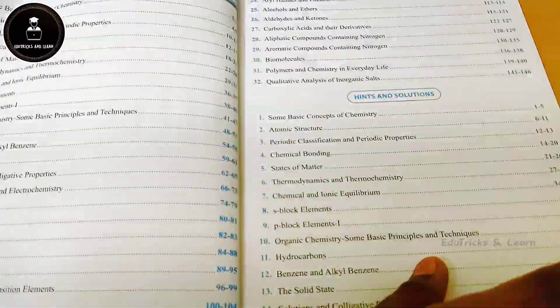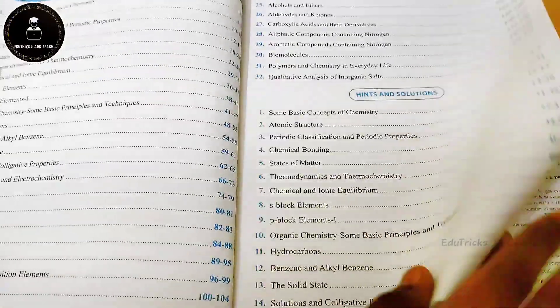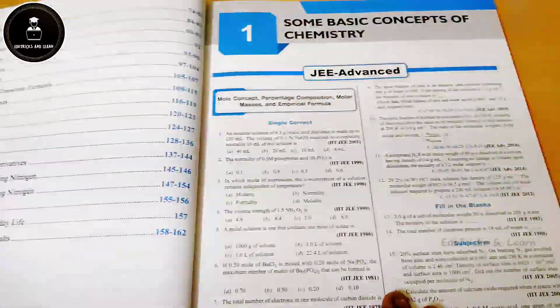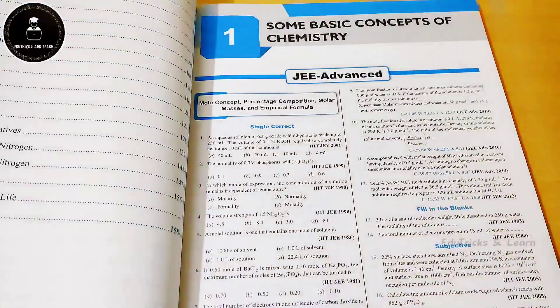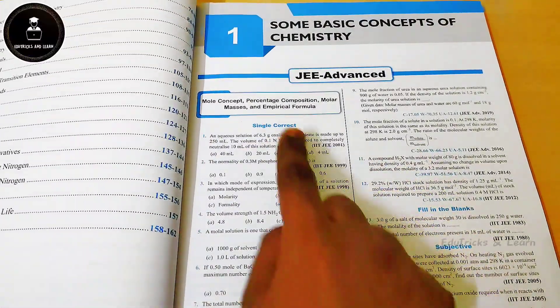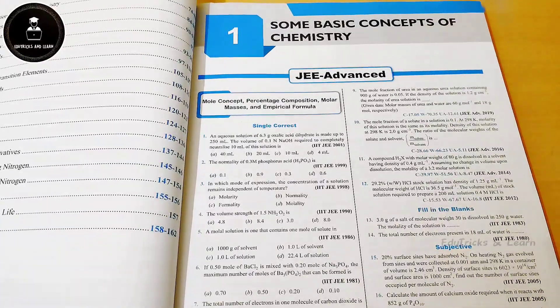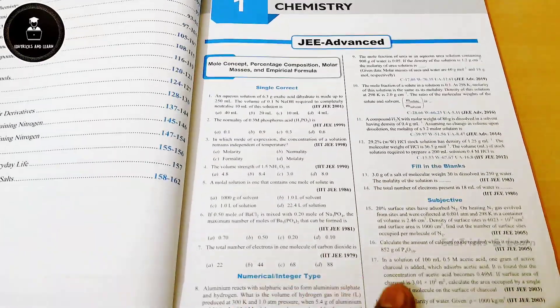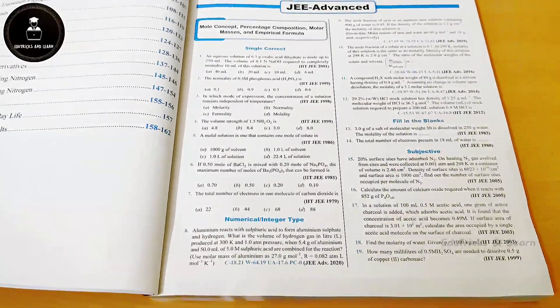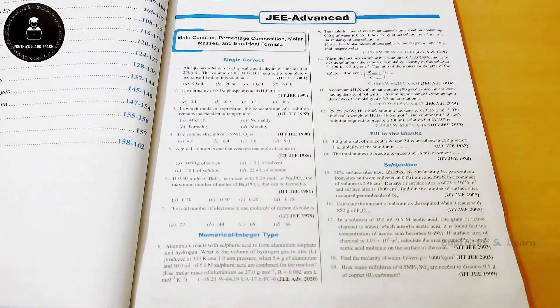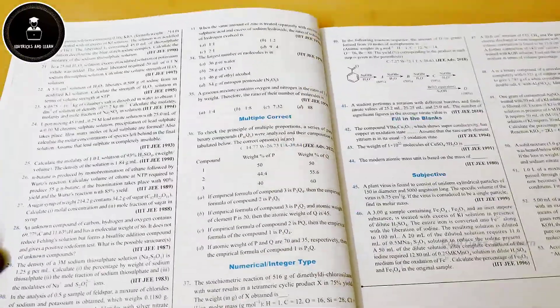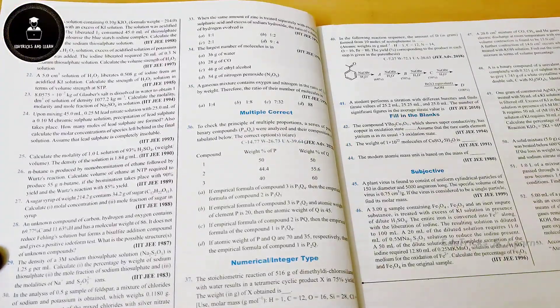Starting with the first chapter, 'Some Basic Concepts of Chemistry,' they have asked topic-wise questions. For example, in the topic 'Mole Concept up to Empirical Formula,' they have included single correct answer questions, numerical-based questions, multiple choice questions, fill in the blanks, and subjective questions. They have also noted the year in which each question was asked — for example, IIT JEE 1989 — and this pattern is followed for all topics of every chapter.